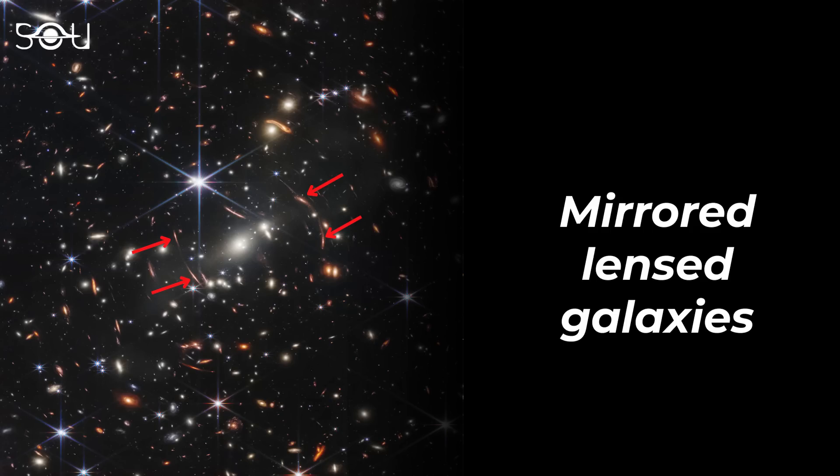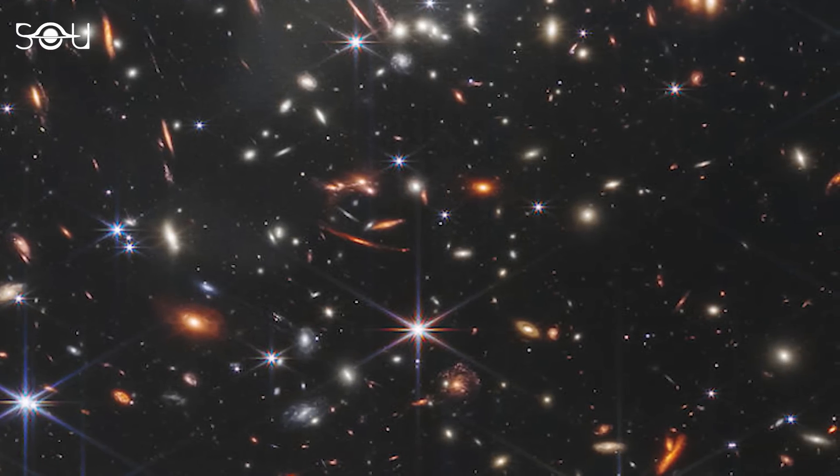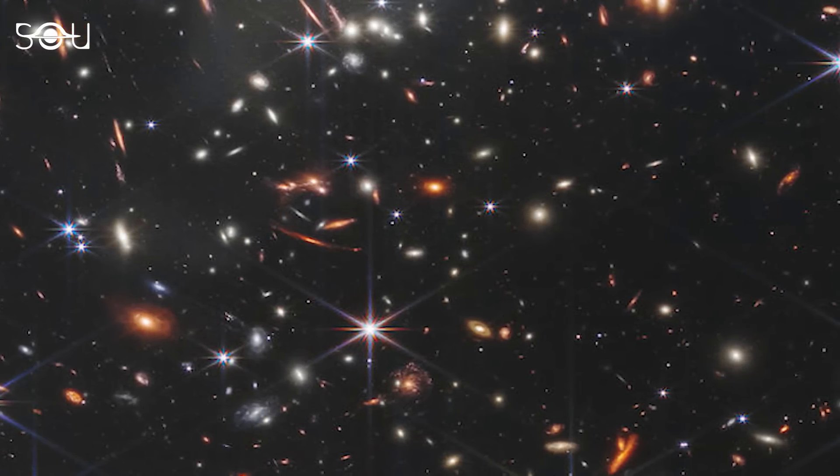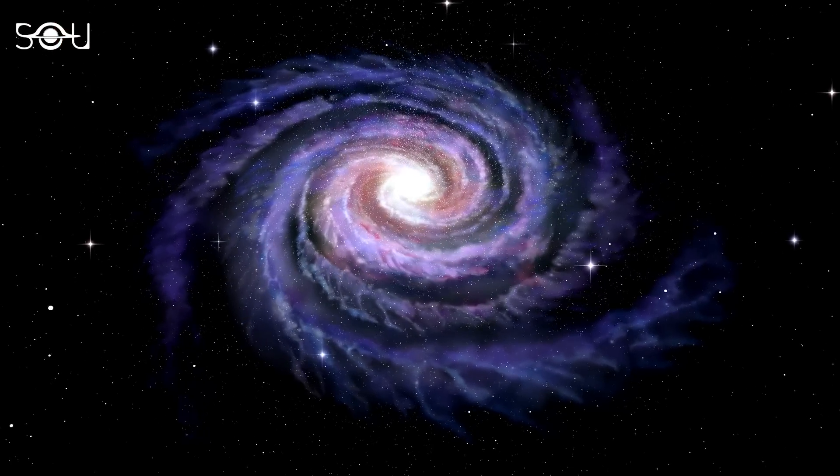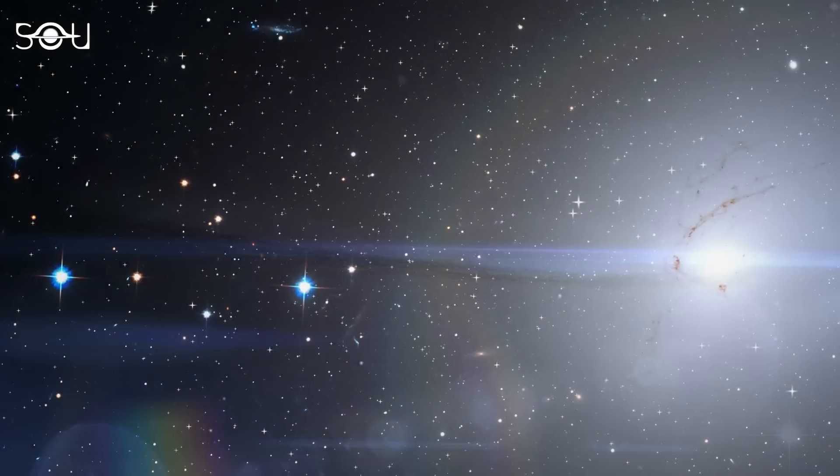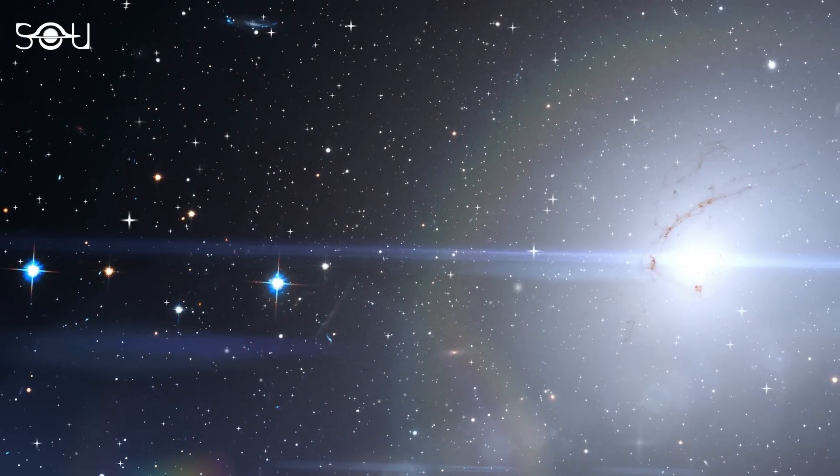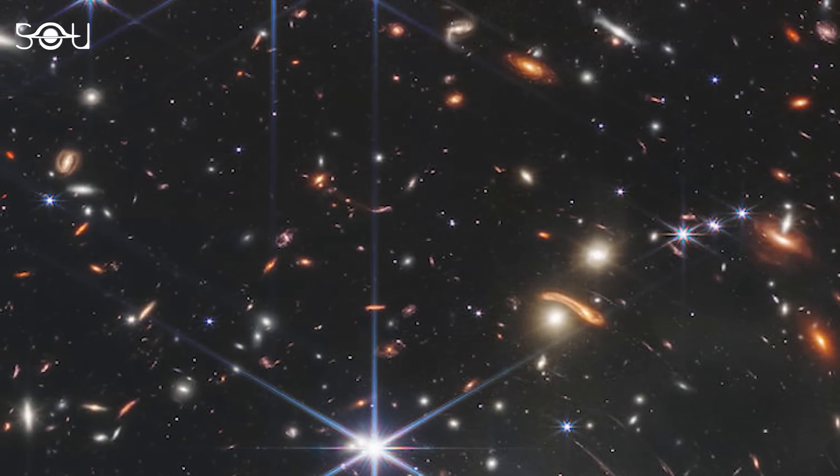However, not all galaxies are mirrored. Some also appear stretched as a result of the magnification. And surprisingly, the galaxies located behind the cluster look nothing like the spiral or elliptical galaxies we find in our local universe. Instead, they look comparatively clumpier and more irregular.